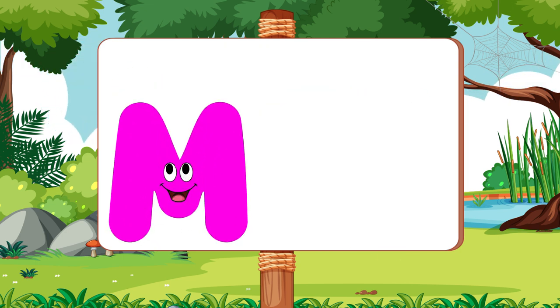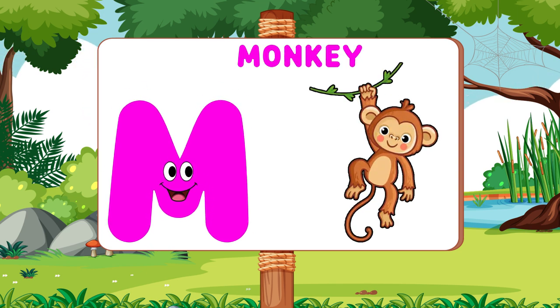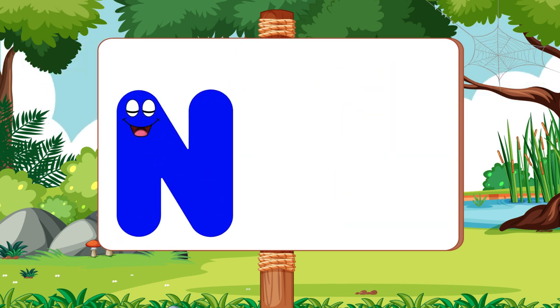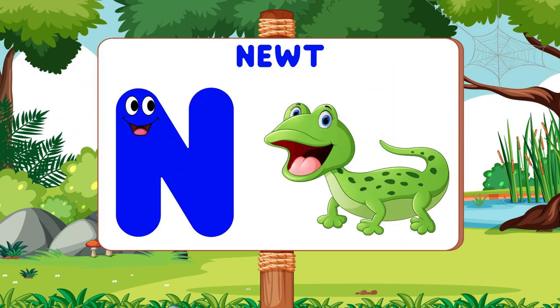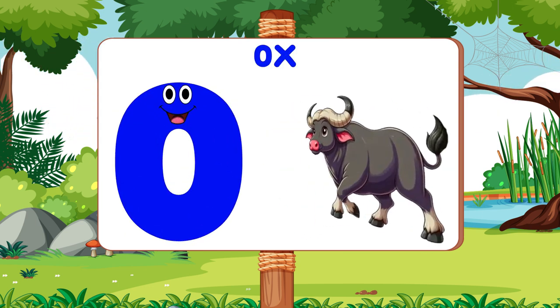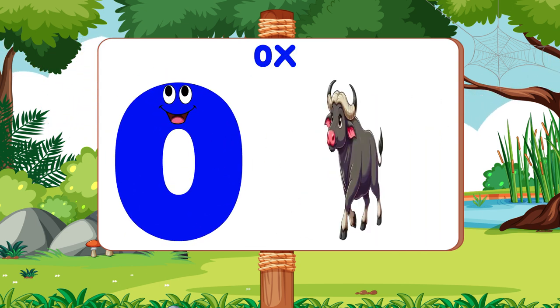M is for Monkey. M, M. Monkey. N is for Newt. N, N. Newt. O is for Ox. O, O. Ox.